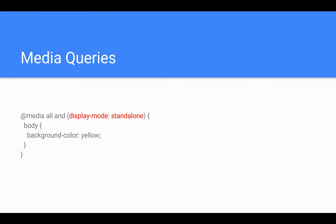After a user installs your Progressive Web App from the Add to Home Screen prompt, we can use media queries to detect whether the user loaded the app through the home screen or through the website. This allows us, for example, to display an install button when accessed via the browser, and when the display mode is standalone — meaning they've already installed it — we can hide that button with display none. This can obviously be used for other CSS customizations as well.